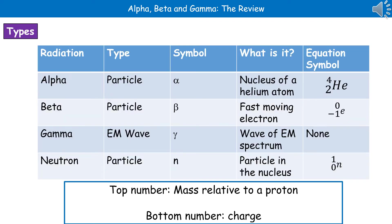In the table, I've summarised the key facts about the four types of radiation that we need to know about: alpha, beta, gamma and neutron radiation. Three of them are particles, and only gamma is an electromagnetic wave. So alpha, beta and neutron are all particles, and gamma is an electromagnetic wave.